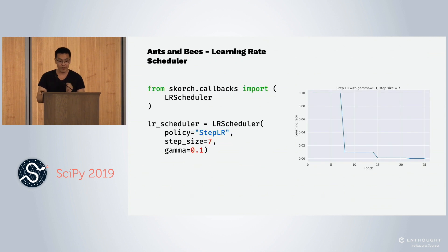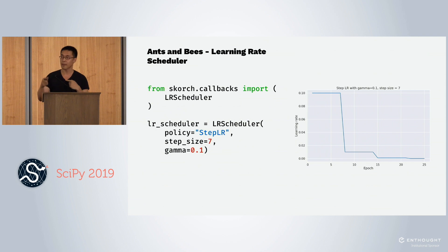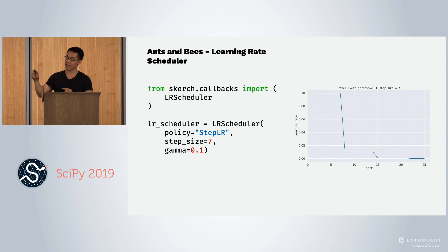What other callbacks do we have? We have a learning rate scheduler callback. In this case, we're going to have a learning schedule that starts high, then steps down and keeps going down.